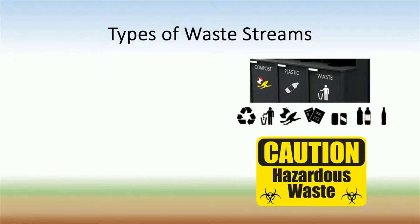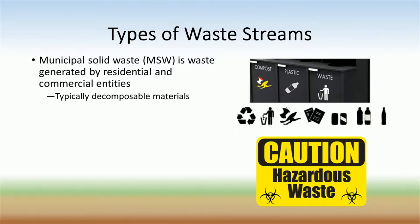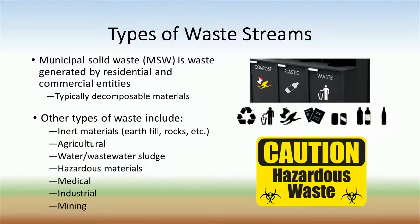Looking at the things you throw away, solid waste comes in many different shapes, sizes, and compositions. The waste stream you should be most familiar with is municipal solid waste. Municipal solid waste is any waste generated by residential and commercial entities. This waste is predominantly composed of decomposable materials. Other common waste streams include inert materials like earthfill and rock, agricultural waste like animal and food waste, water and wastewater sludge, hazardous waste like spent radioactive materials, medical waste like needles and items contaminated with human blood, industrial waste like chemical solvents and useless byproducts, and mining waste.